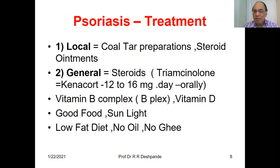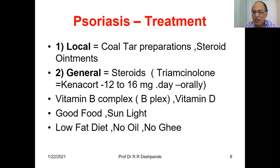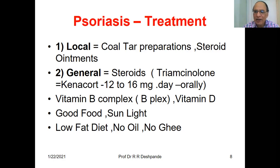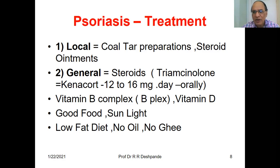Locally, we can apply tar preparations and steroid ointments. Generally, the steroid used is Triamcinolone, also called Kenacort — 12 to 16 mg tablet orally. Nowadays we are also using Visolon. Vitamin B complex is also necessary. Vitamin D, good food, and sunlight are important. Since this may involve fat disturbance, if the patient is obese with dyslipidemia, counsel them to take little fat, little oil, little ghee, as dyslipidemia may be associated with psoriasis.